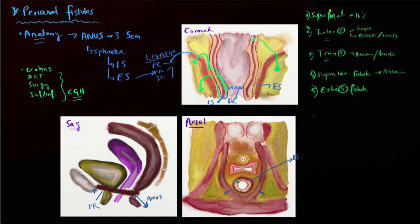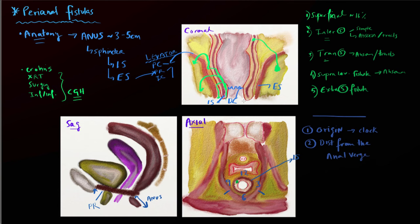When describing these fistulas, there are certain elements that are important to mention. The first is the origin. We refer to the anus like a clock on axial images: 12 o'clock anteriorly, 3 o'clock, 6 o'clock posteriorly, and 9 o'clock. We say the mucosal opening is seen at a certain clock position — whether it's 1 o'clock, 4 o'clock, etc. It's also important to mention the distance of that opening from the anal verge, which can be measured on a sagittal or coronal image.